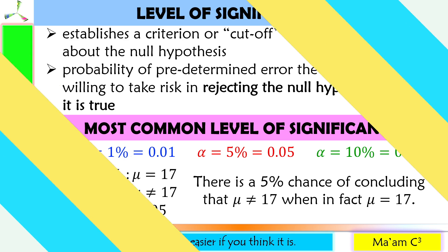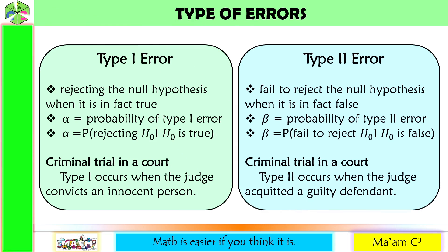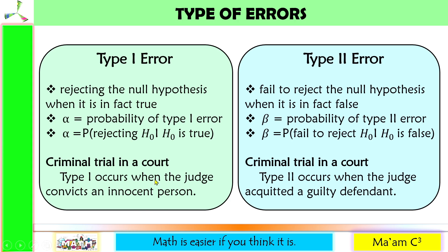We have two types of errors: type 1 and type 2. Type 1 error is rejecting the null hypothesis when it is in fact true. The level of significance, denoted by alpha, is the probability of a type 1 error — meaning the probability of rejecting the null hypothesis when in fact it is true. For example, in a criminal trial in court, type 1 occurs when the judge convicts an innocent person.